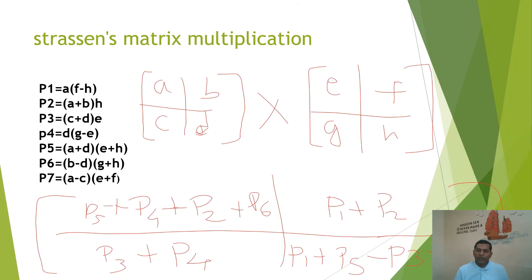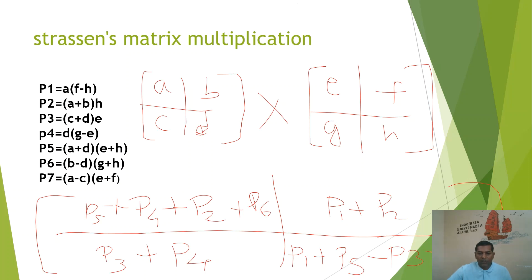This is what Strassen has done. Strassen is a well-known scientist who provided a new and innovative matrix multiplication method. With matrix A having elements A, B, C, D and matrix B having elements E, F, G, H, the resultant matrix elements are expressed as: P5 + P4 + P2 + P6 for the first element, P1 + P2 for the second, P3 + P4 for the third, and P1 + P5 + P3 − P2 for the fourth element.